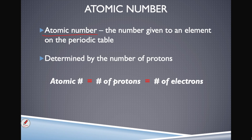The atomic numbers were given to elements based on the number of protons they have. When we see hydrogen having atomic number one, that means there is one proton in an atom of hydrogen. So the atomic number is equal to the number of protons.